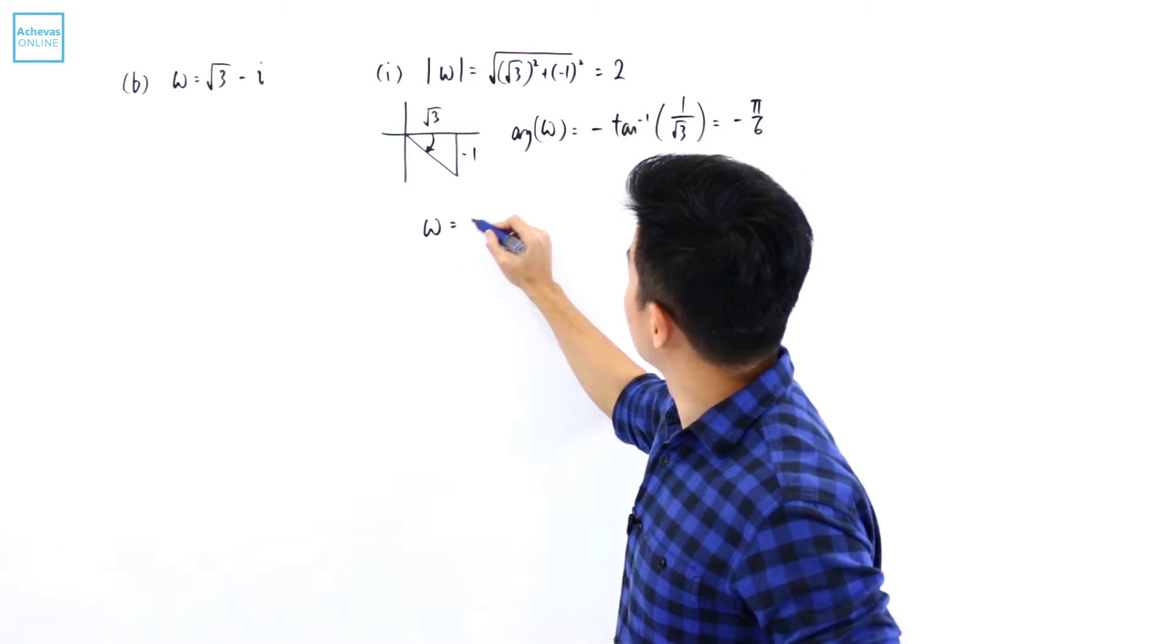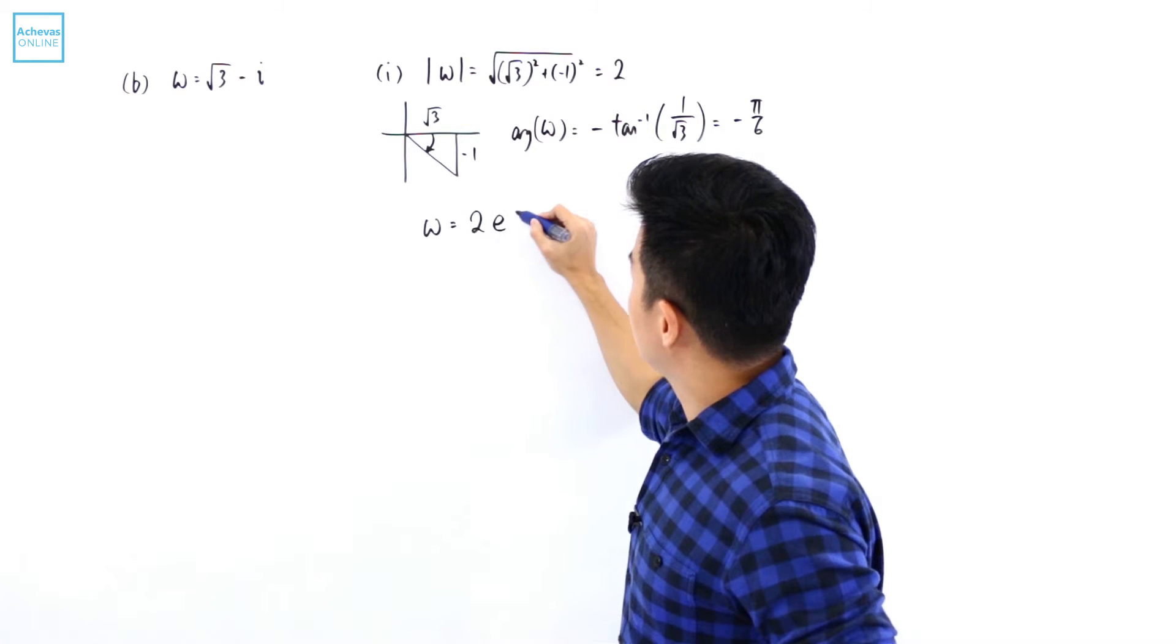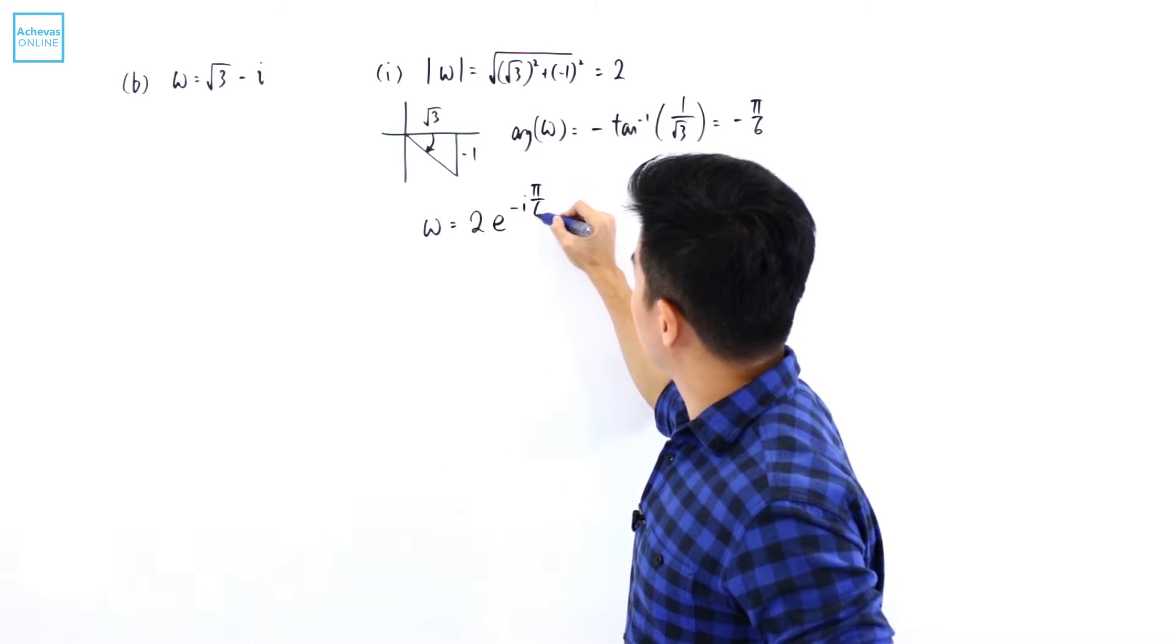Which means that w can be re-expressed as 2 e to the power of minus i pi over 6.